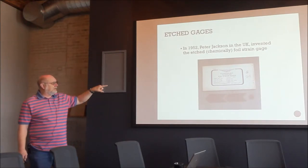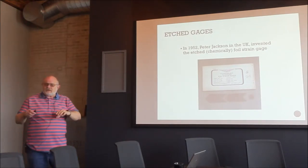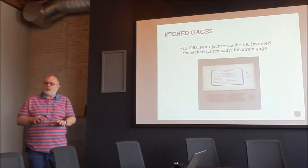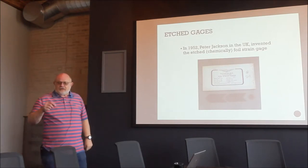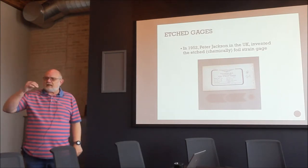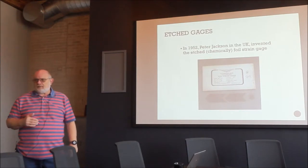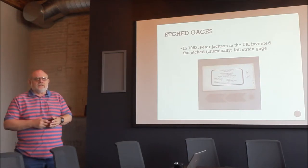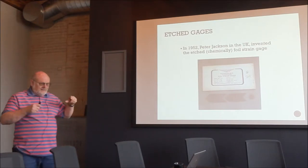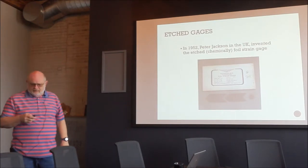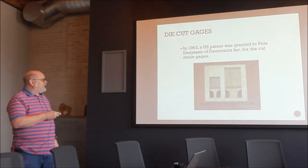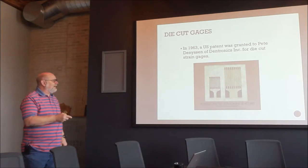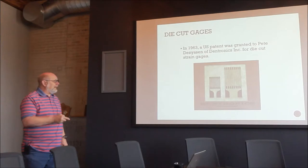In 1952, a researcher in the UK came up with a chemically etched foil strain gauge, similar to what we use today. The problem was that the edges were not clean and sharp, causing fatigue issues due to notch effects and non-uniform etching. They were fine for laboratory use but not suitable for fatigue applications.